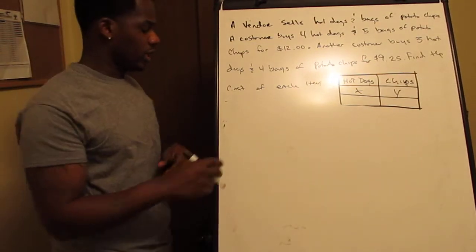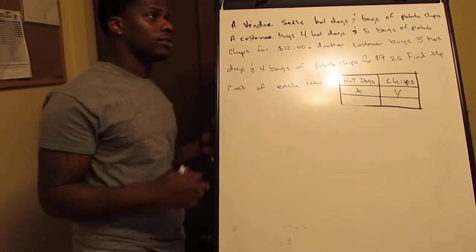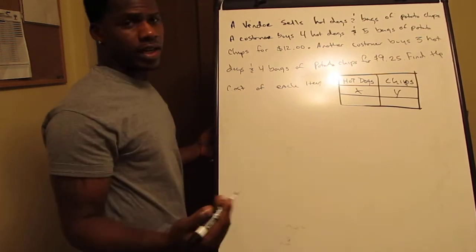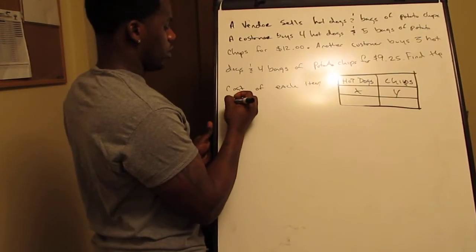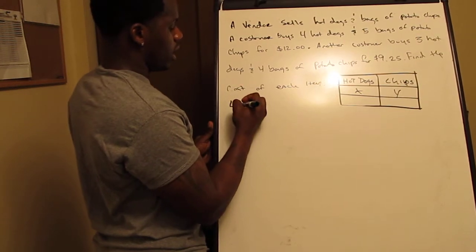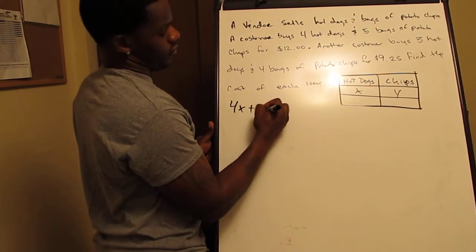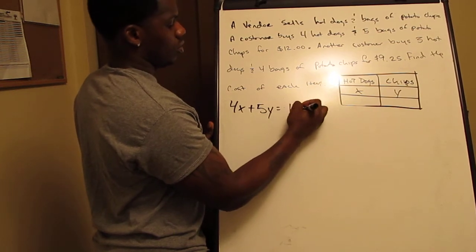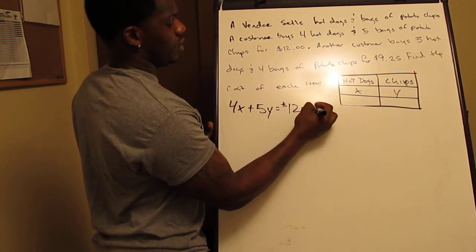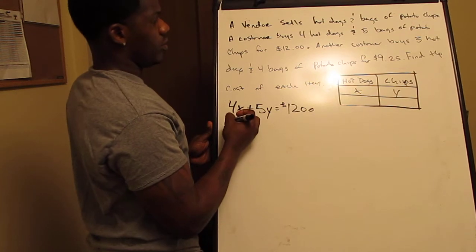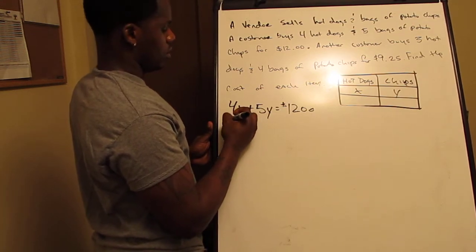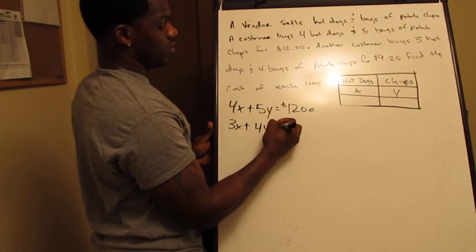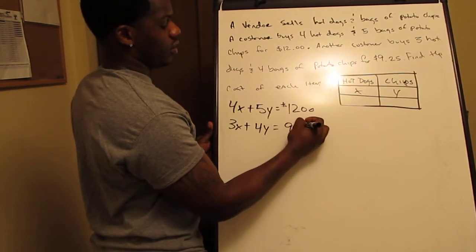The second thing we're going to do is make a relationship between X and Y. So we write: four hot dogs plus five potato chips equals $12, and three hot dogs plus four potato chips equals $9.25.